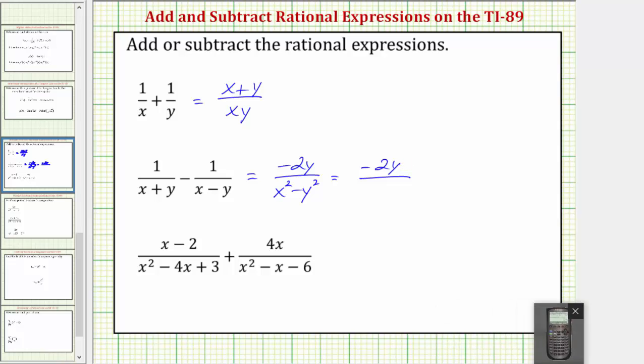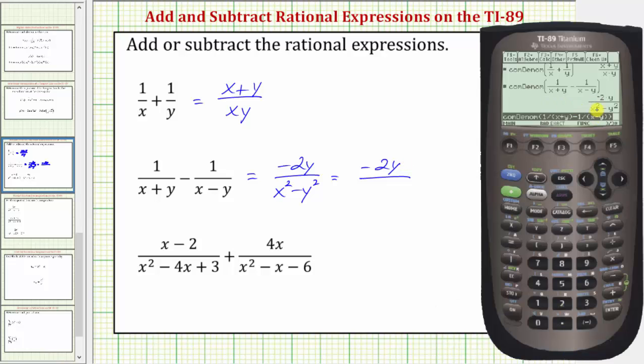So going back to the calculator, we'll factor the denominator of x squared minus y squared by pressing F2 for algebra, and then number two for factor, and enter x raised to the power of two minus y raised to the power of two,